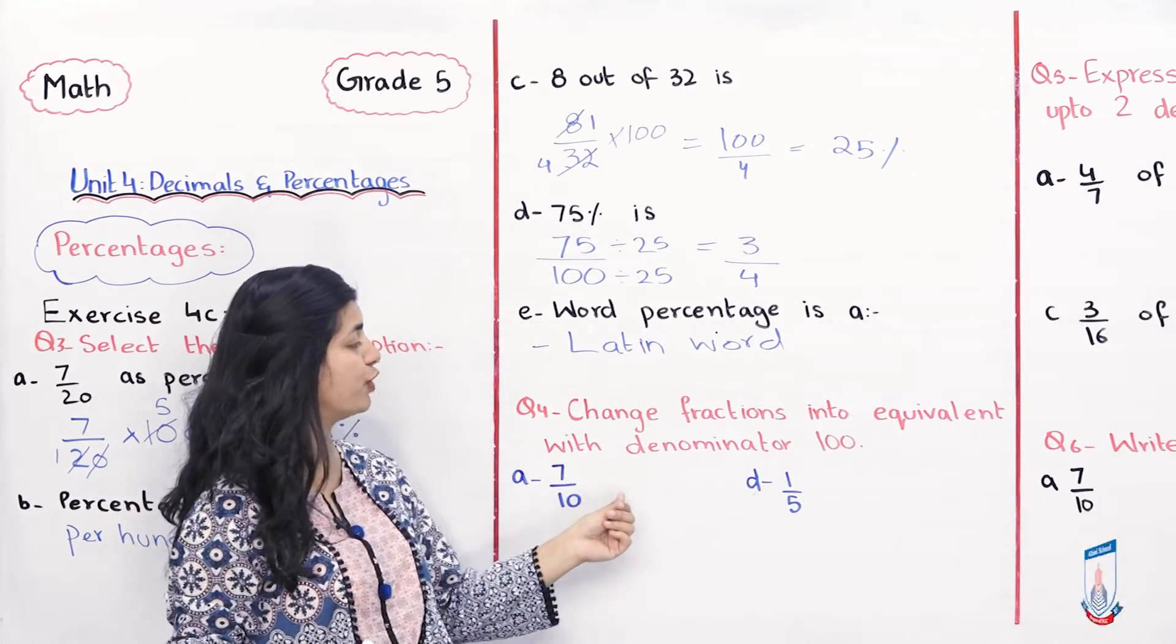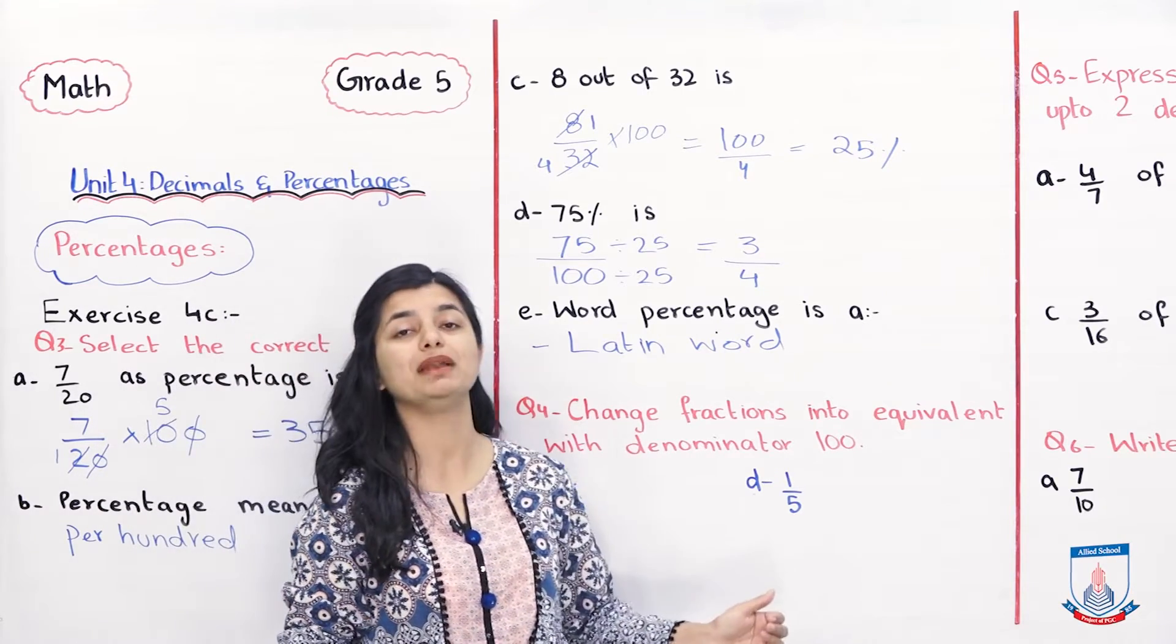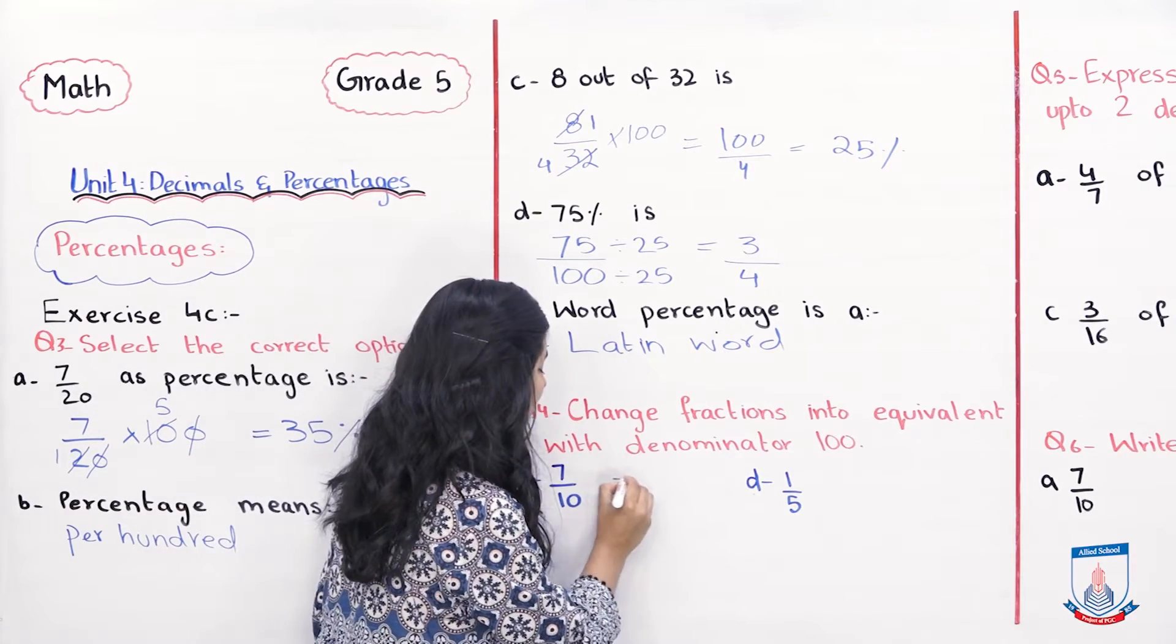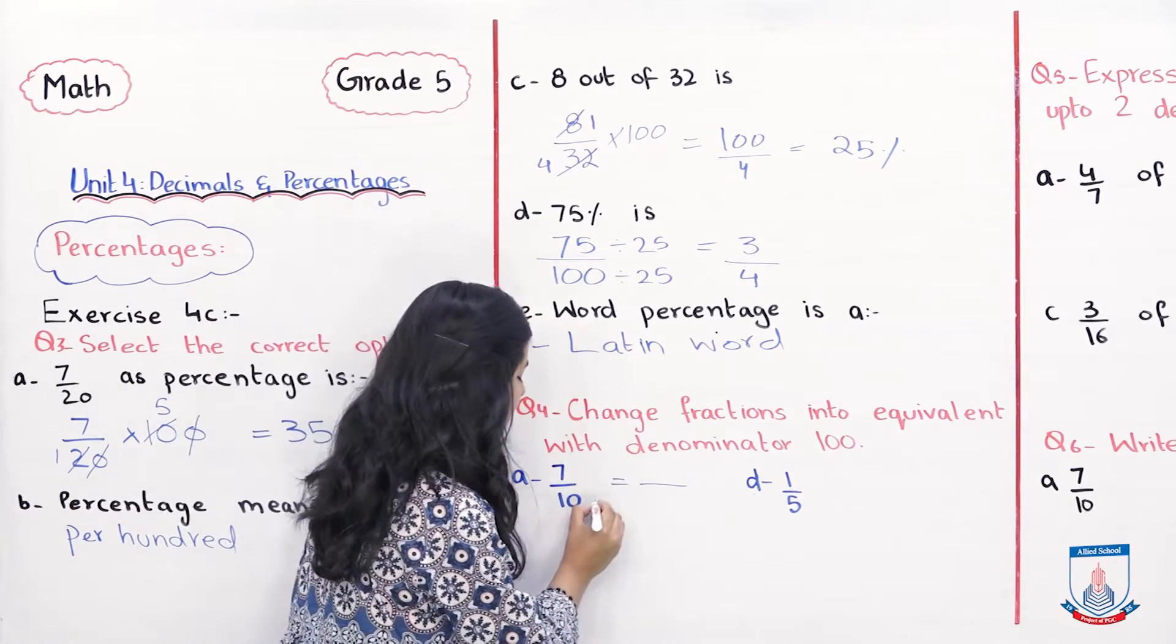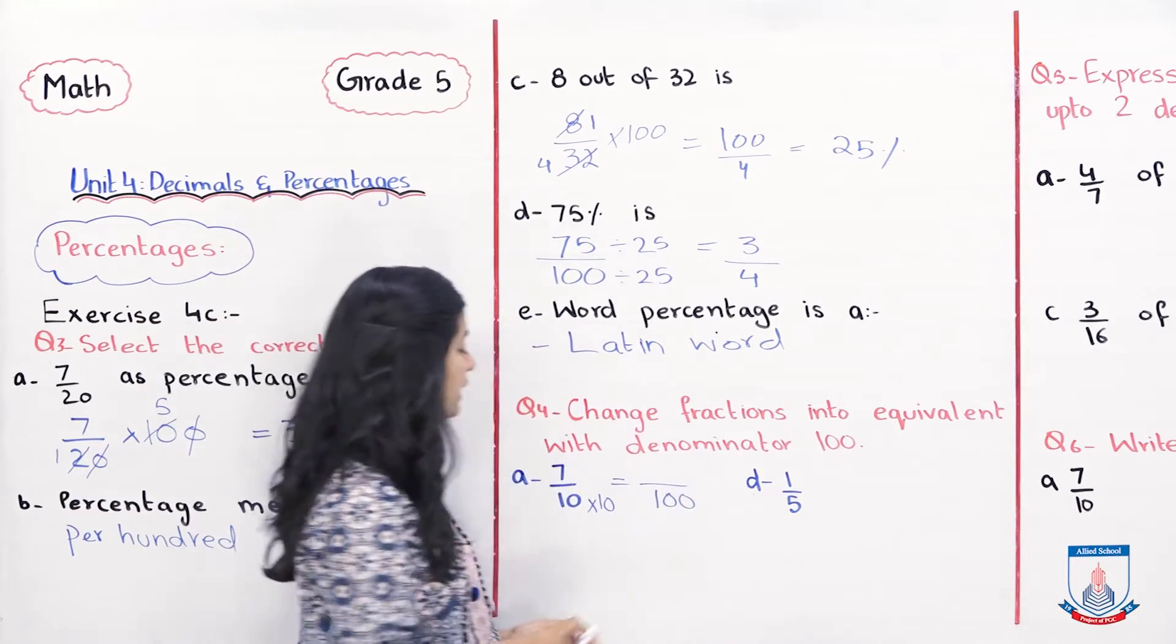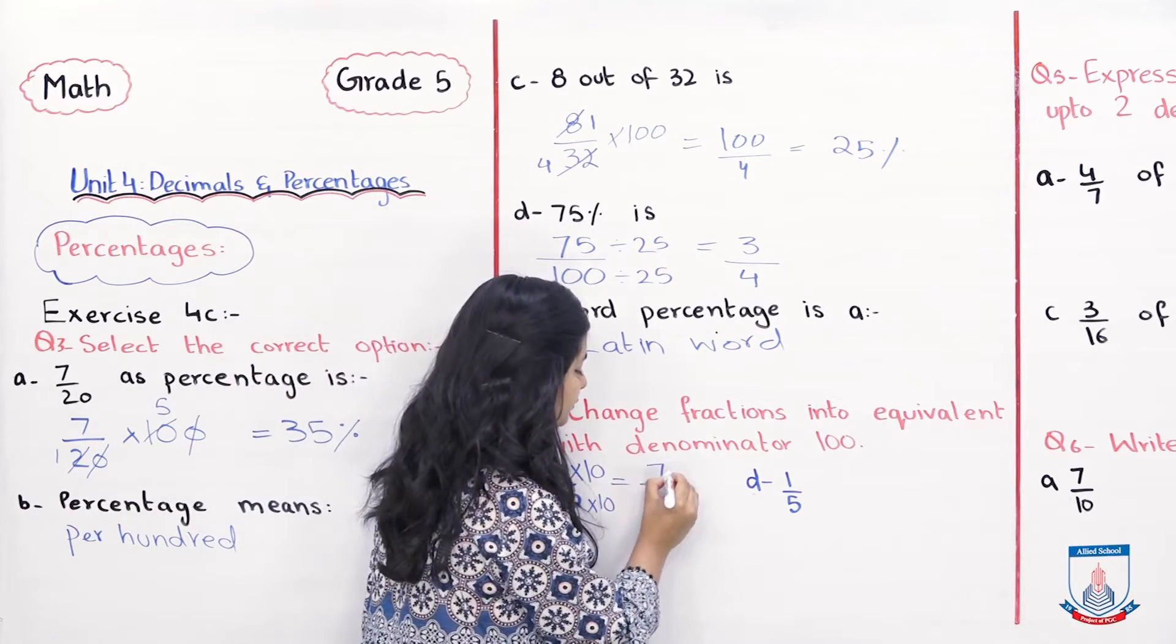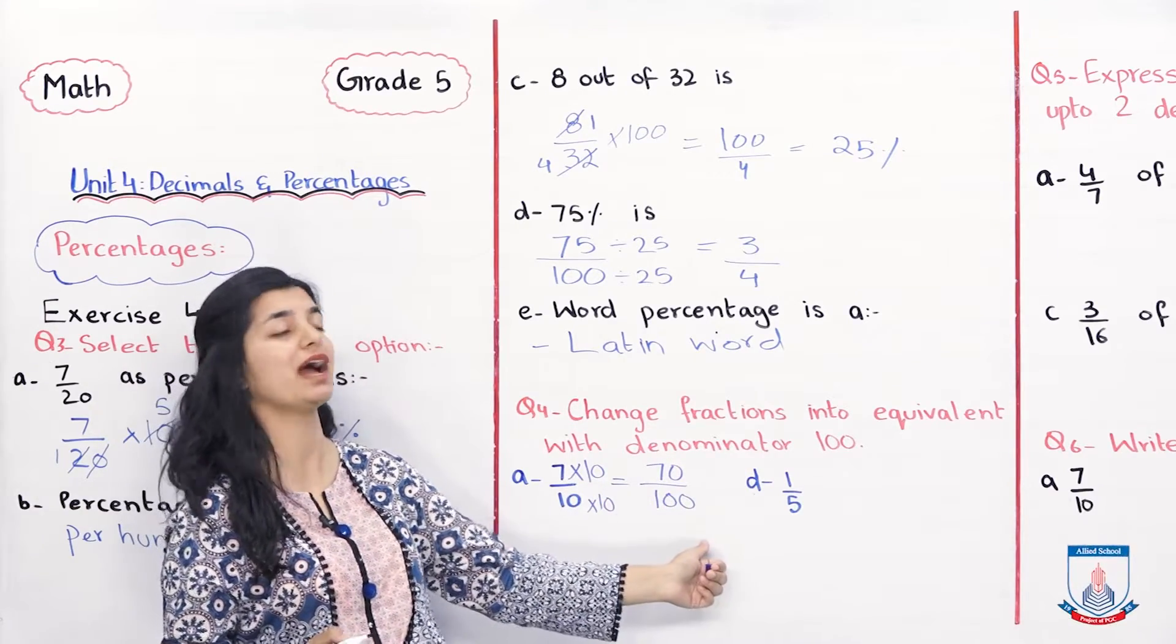Ab hum dekh sakte hai question number 4. Change fractions into equivalent with denominator 100. Toh aapne kya karna hai? Aapne inko equivalent fractions me tabdil karna hai lekin aapka denominator 100 banana hai aapne. Toh agar aap yahan per dekho, aap kis tarha se niche jo 10 hai usko 100 bana sakte ho. 10 ko simply 10 se multiply karke, toh denominator ho jayega 100. Lekin agar aap 10 ko 10 se multiply karo hai, toh numerator ko bhi karna padega. And 7 into 10 is 70. Toh aapka equivalent fraction jo hai 70 over 100 hai with 100 as the denominator.